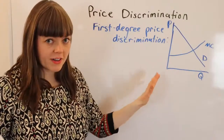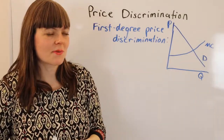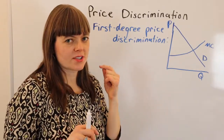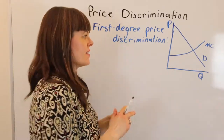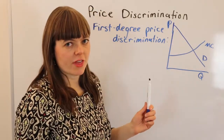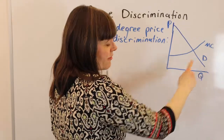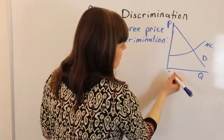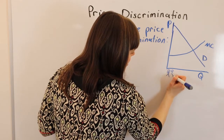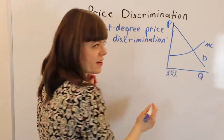With perfect price discrimination, the firm looks inside the person's head to see exactly what is the maximum amount the person would pay for that product. That's how the demand curve is derived — by lining people up along this axis according to how much they are willing to pay for the product in their head.